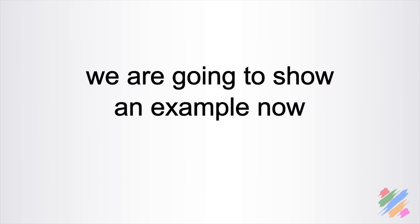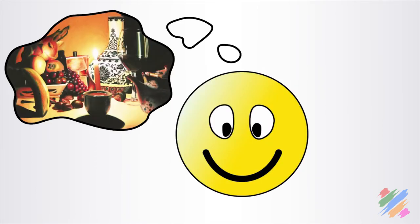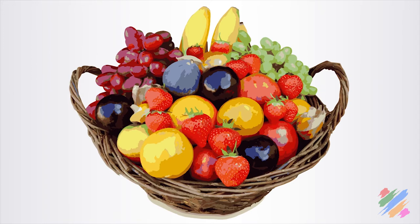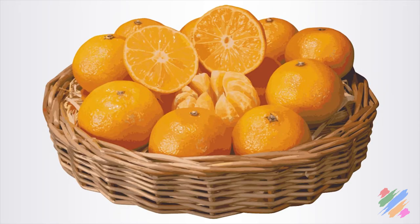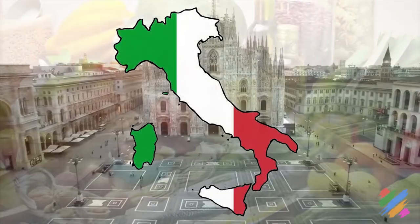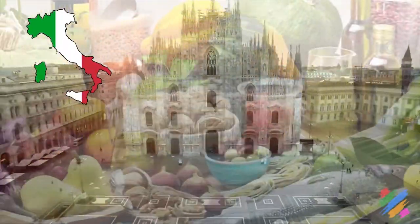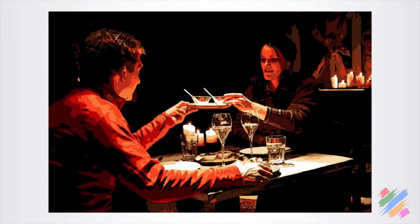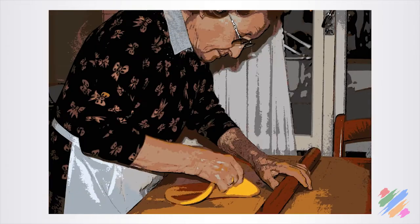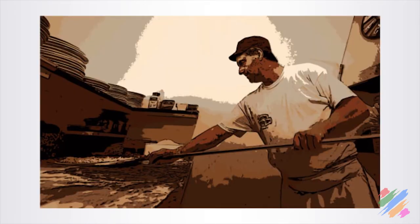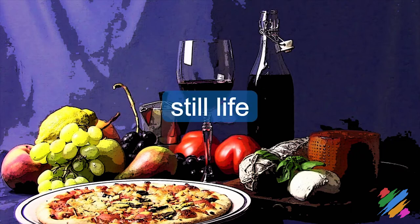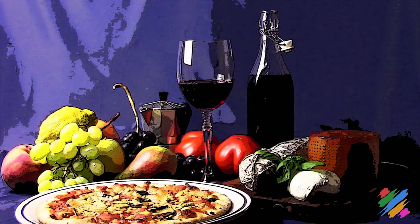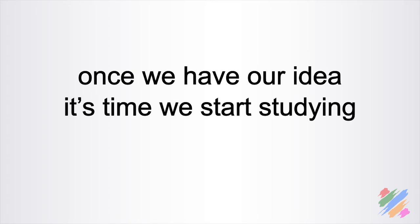We are going to show an example now. Starting from an idea, we are going to see one of the many possible ways to set up a scene for our painting. Let's say, for example, that we want to represent something about Italian food culture. If we think carefully, we can probably come up with different ideas on how to represent it. Here we are going to use a still life where we will put many different kinds of Italian foods and beverages. Once we have our idea, it is time to start studying the subject.